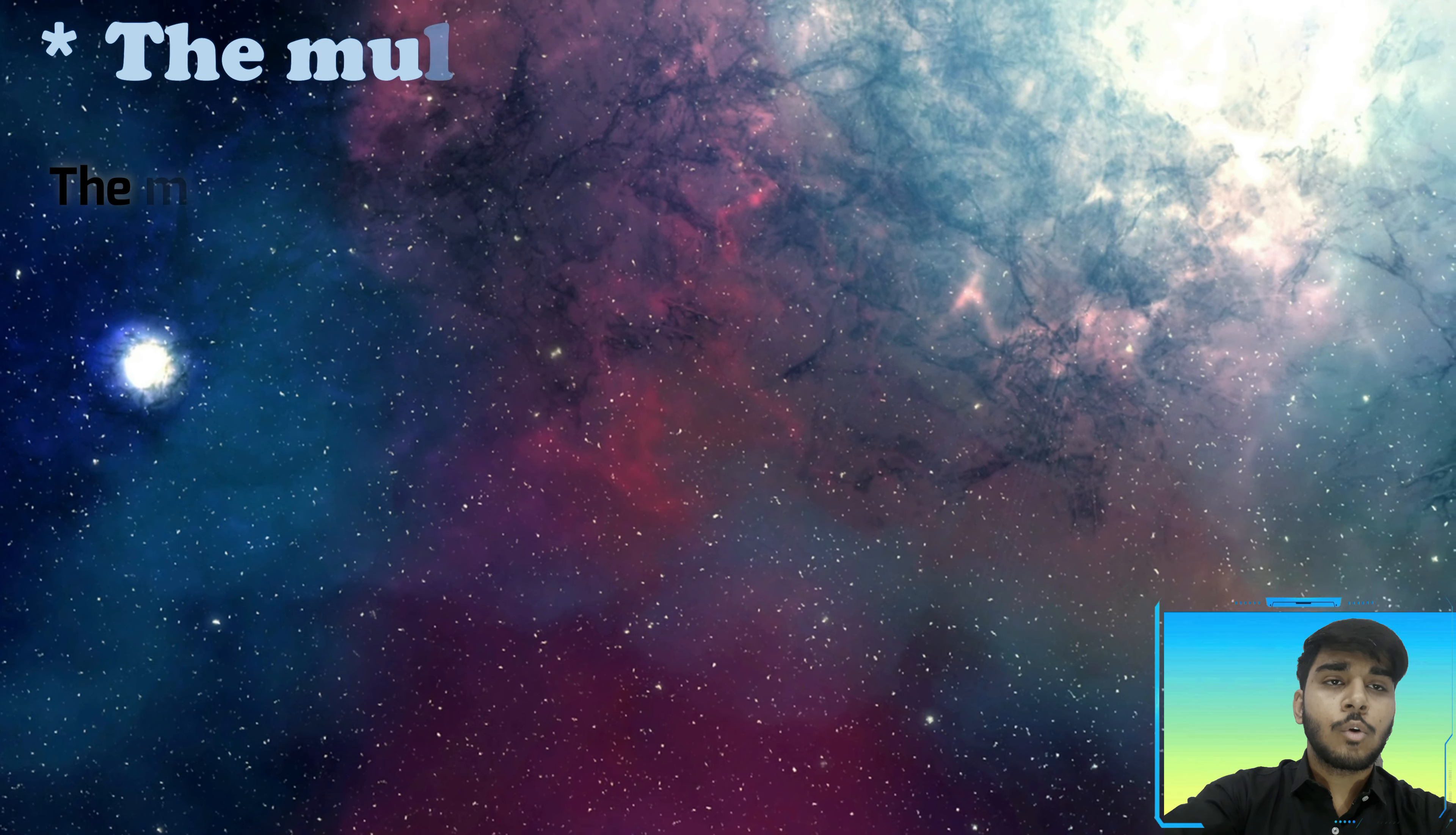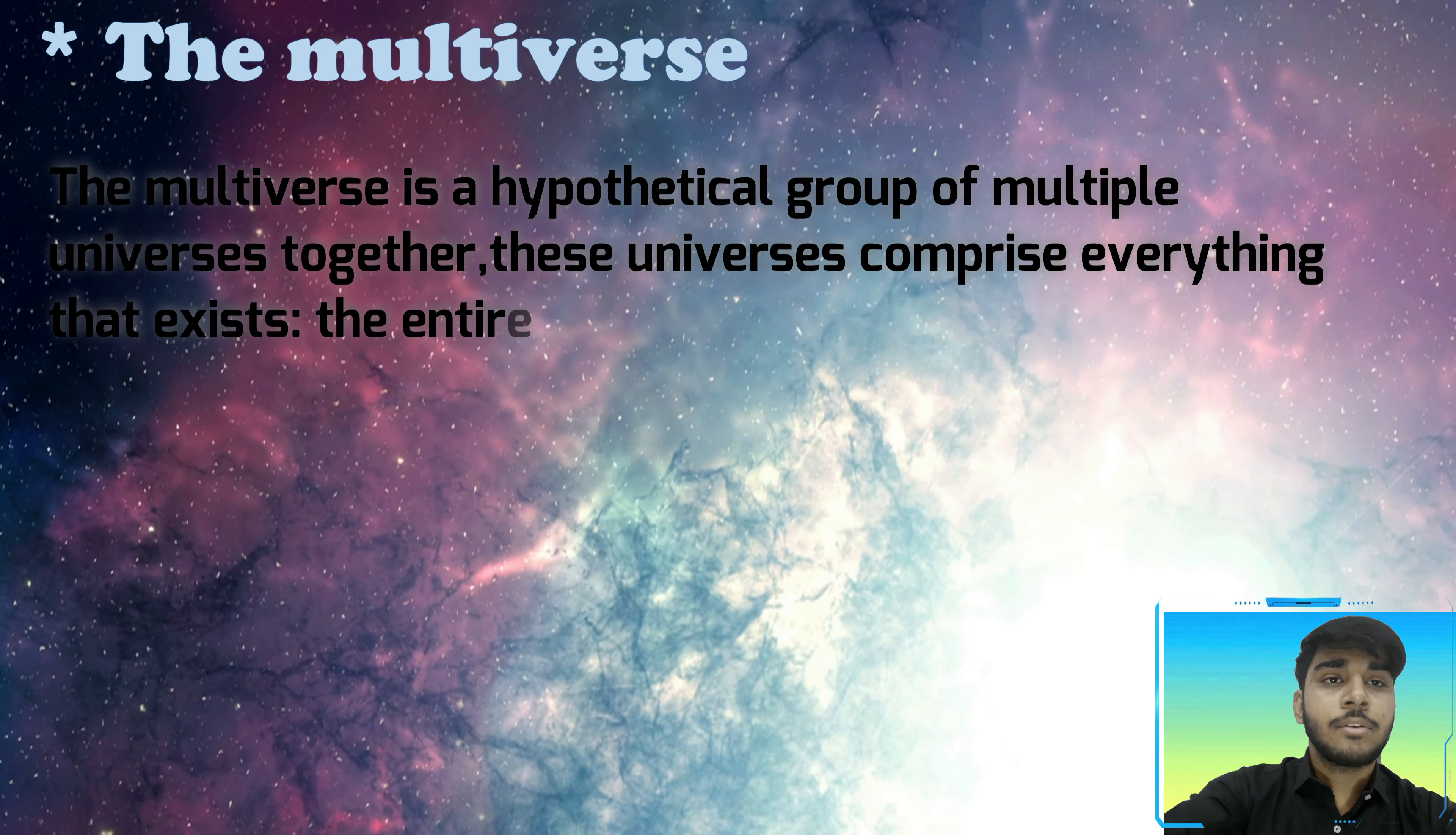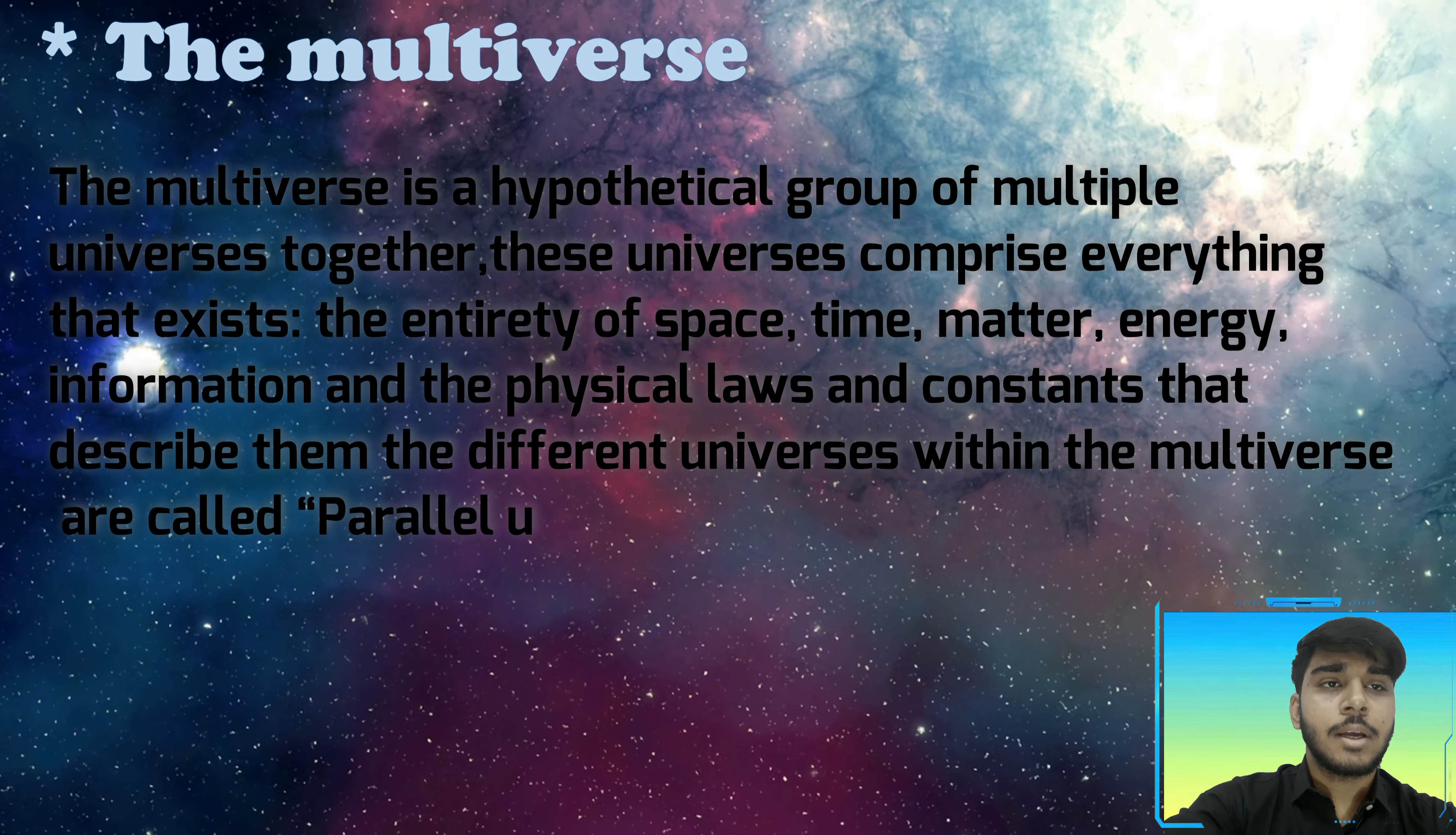The multiverse is a hypothetical group of multiple universes together. These universes comprise everything: time, space, matter, information, energy, and physical laws and constants that describe them. Different universes within the multiverse are called parallel worlds, parallel universes, other worlds, other universes, alternate universes, and so on.